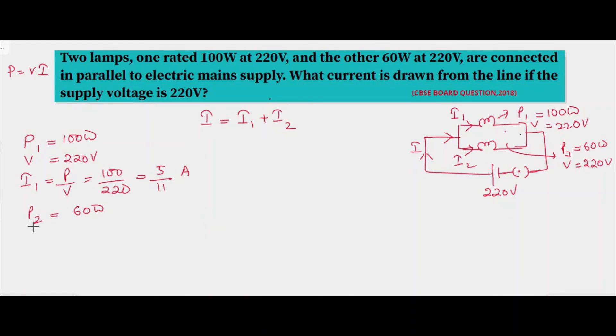Similarly, the power of the second bulb is given as 60 watt and it is also operating at 220 volt. The current through the second bulb would be P2 by V, which is 60 by 220, which is 3 by 20, which is 3 by 11 ampere.